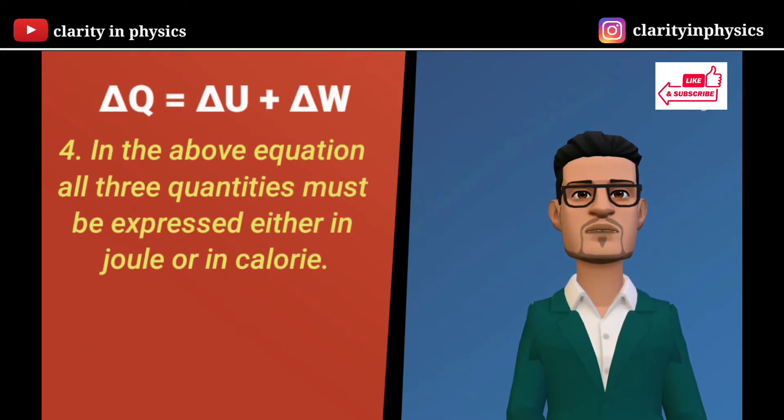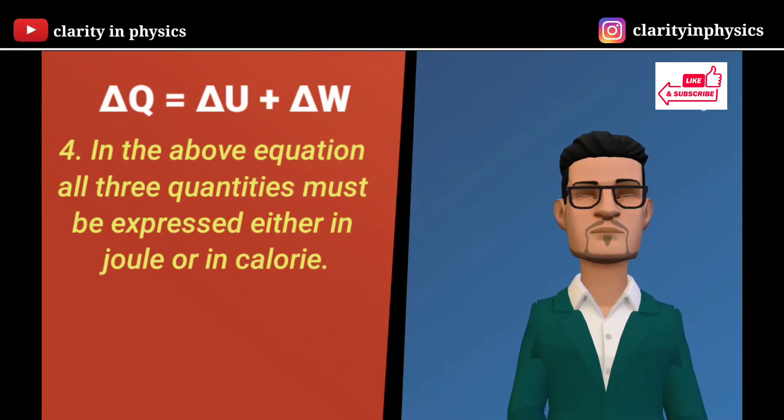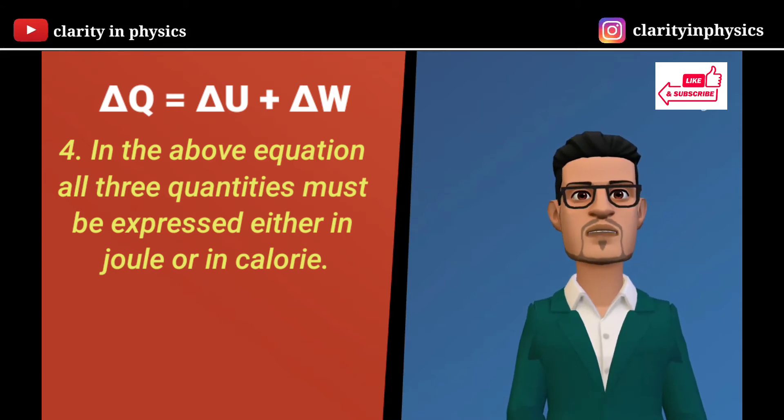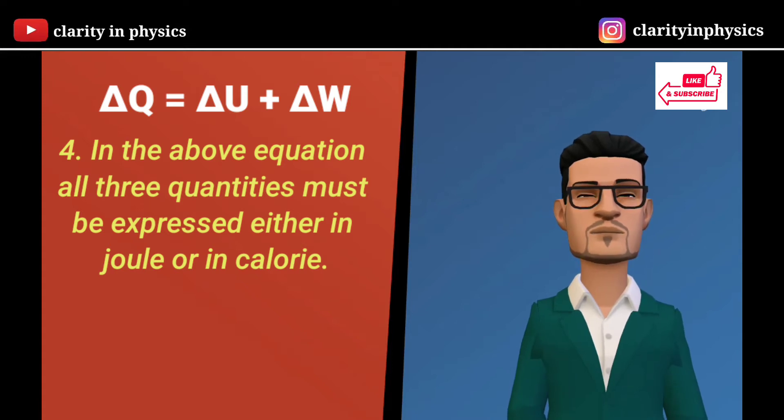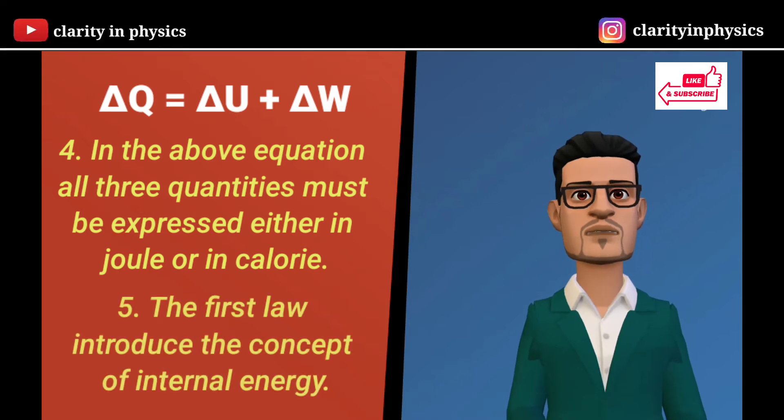In the above equation, all three quantities ΔQ, ΔU, and ΔW must be expressed either in joule or in calorie. The first law introduces the concept of internal energy.